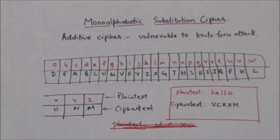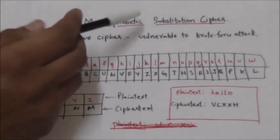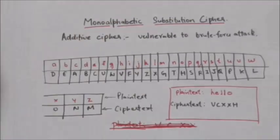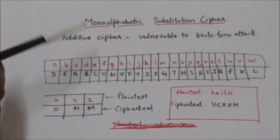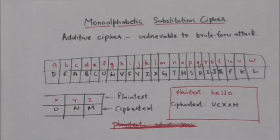Hello friends, welcome back. In this tutorial we will study about monoalphabetic substitution cipher. In the previous tutorial we studied about additive cipher. Additive ciphers have a small key domain, therefore they are very vulnerable to brute force attack.